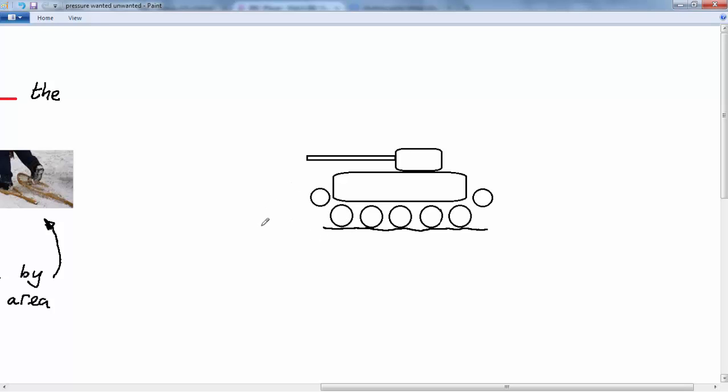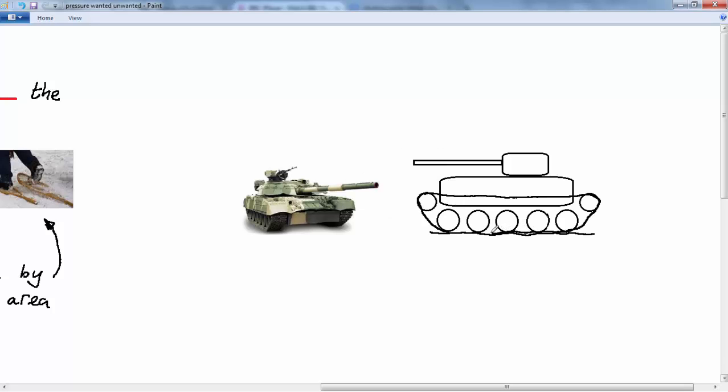So the tank designers overcame this problem by wrapping a caterpillar track around the wheels. And so by using this caterpillar track, the weight of the tank is spread over a larger area.